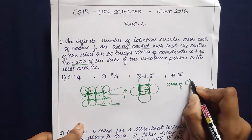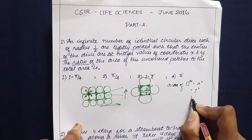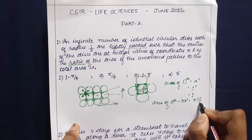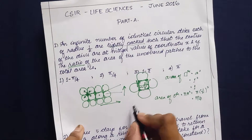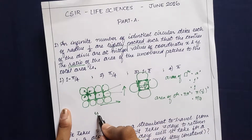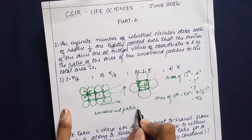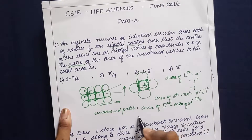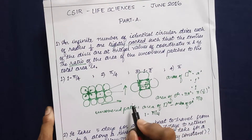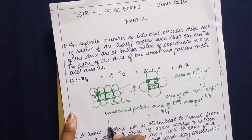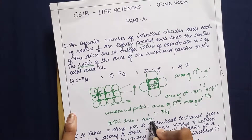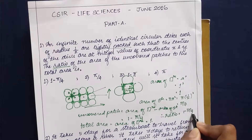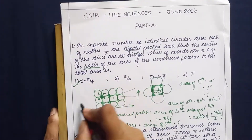Area of square is a squared, which is 1 squared = 1. Area of circle is π r squared = π × (1/2)² = π/4. Area of the uncovered region = area of square minus area of circle = 1 − π/4. The total area is the area of the square, which is 1. Therefore, the ratio is (1 − π/4) / 1 = 1 − π/4. Option 1 is the correct answer.